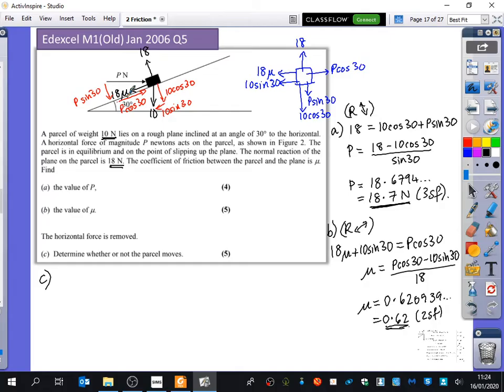We wanted to find out what P and what μ were, so I just did resolving perpendicular to the plane to come up with P as 18.7. And then I did resolving parallel to the plane to find out that μ, by solving that equation, came out at 0.62 or 0.621, depending if you did two significant or three significant figures.